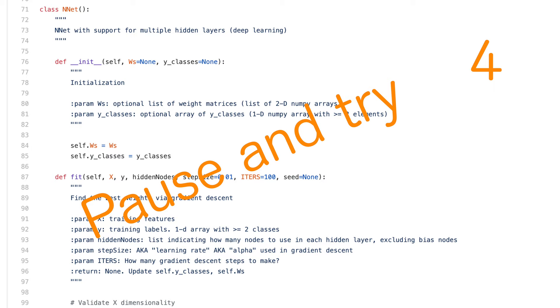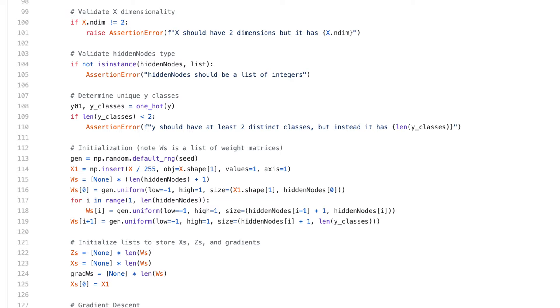Here's the code I came up with. The first mildly tricky part is initializing Ws, the list of weight matrices. I do it by initializing Ws as an empty list with one more element than the length of hidden nodes.